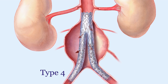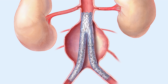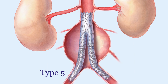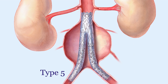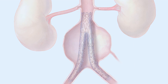A Type 4 leak is transgraft hyperfiltration, where blood slowly filters through the walls of the stent into the aneurysm sac. Type 5 endoleaks are characterized by continued pressure and growth of the aneurysm sac without any definable endoleak.